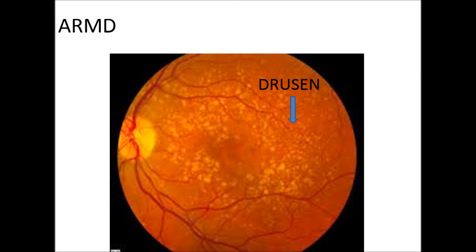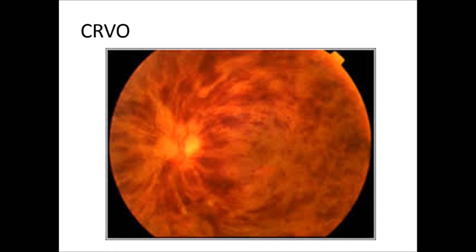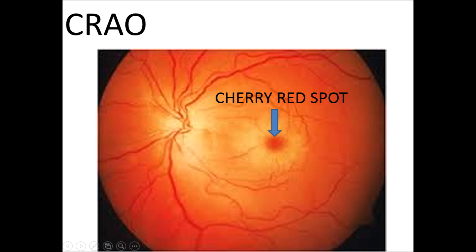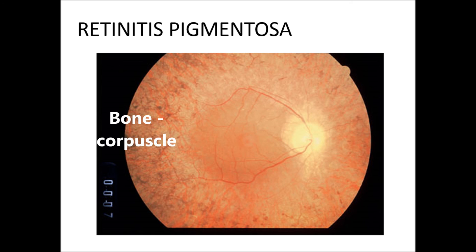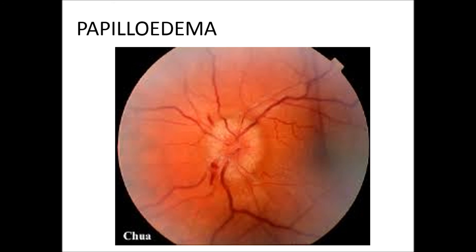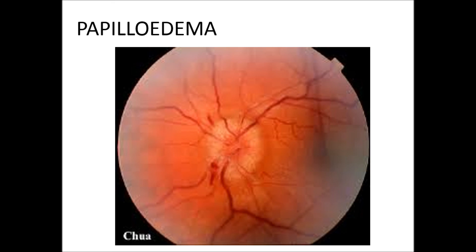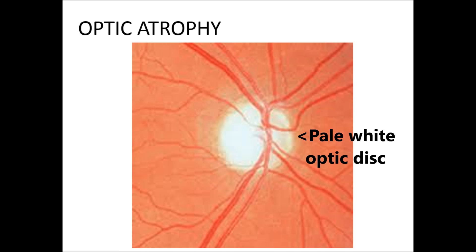In age-related macular degeneration, there will be drusen in the macula. In central retinal vein occlusion, there will be extensive hemorrhages, often described as a tomato-splashed appearance. In central retinal artery occlusion, the retina appears pale but the foveola appears pink — this is called the cherry red spot. In retinitis pigmentosa, a bone corpuscle-like pigment deposit is seen in clumps in the equator close to the retinal vessels. In papilledema, the physiological cup is obliterated, the disc margins are blurred and raised above the retinal surface with peripapillary hemorrhages, and the retinal veins are engorged and tortuous. In optic atrophy, the optic disc is pale white in colour.